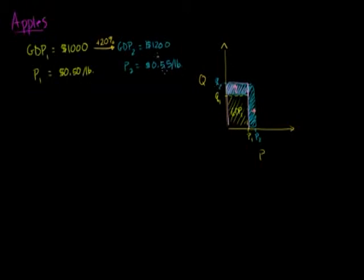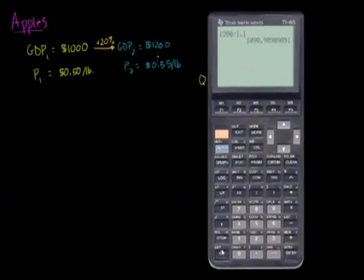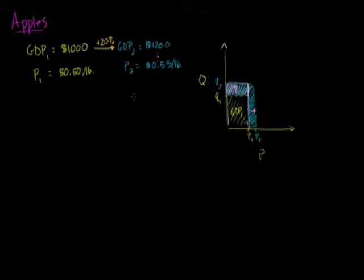So if we divide 1,200 divided by 55 cents. Let me get my calculator out. So if I do 1,200 divided by 55 cents. This is my quantity of apples in pounds in year two. And I'll just round it. 2,182. So the quantity in year two is 2,182 pounds.